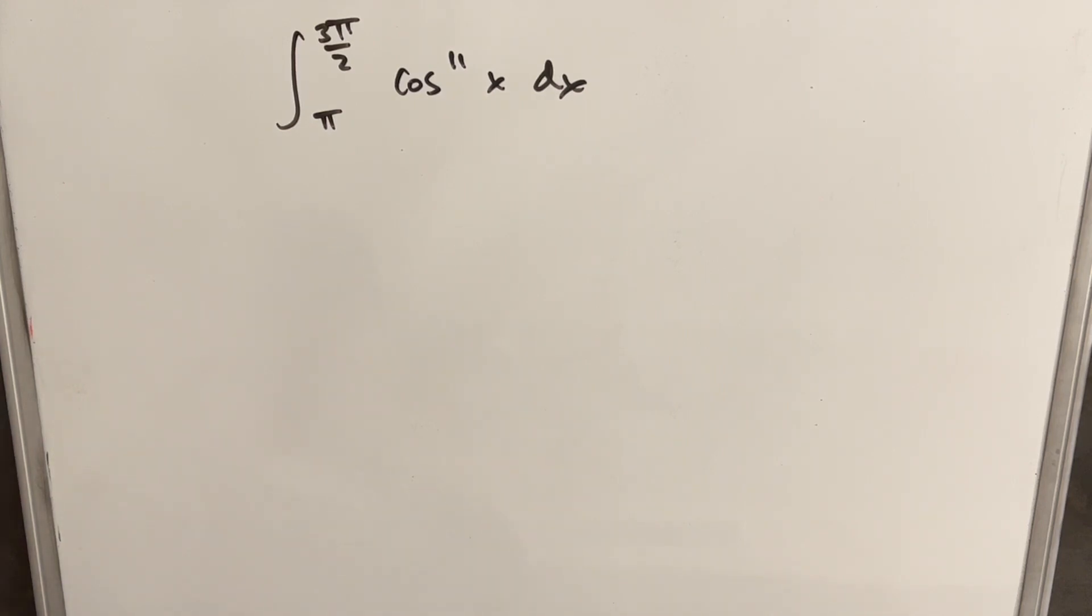Okay, we have on the board here a really interesting integral that I wanted to go over. We have the integral from 3π/2 to π of cosine to the 11th x dx. Well, the big problem kind of staring at us is the large power on the cosine, right? If it was cosine squared, cosine cubed, we'd be fine. But with cosine of the 11th, we don't really want to use just the normal double angle formulas or u substitution or anything like that.